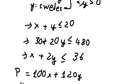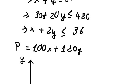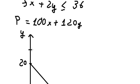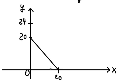For the second constraint, when x equals zero, we divide both sides by 20 and we get y equals 24. When y equals zero, we divide both sides by 30: 480 divided by 30 gives 16. So the point 16 is on the x-axis.